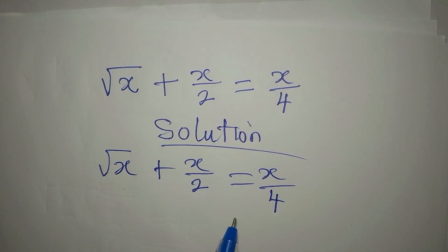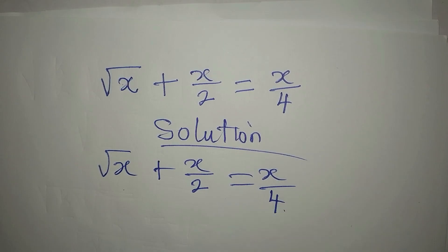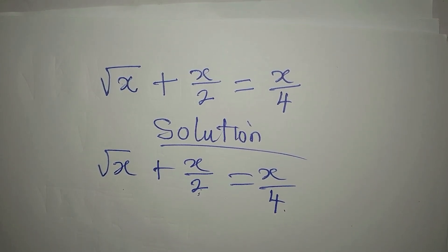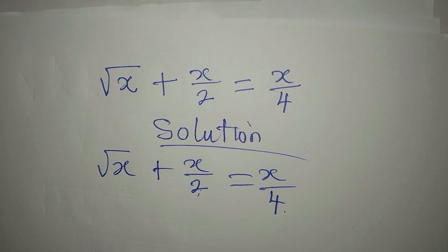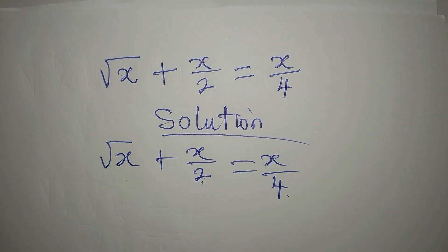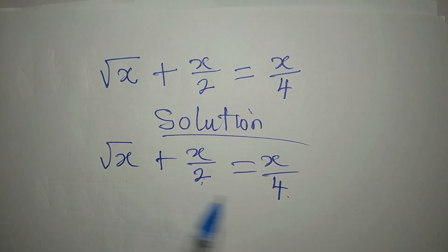What we're going to do is find the LCM of two and four. The LCM of two and four is four, so we're going to multiply four by each of these terms.